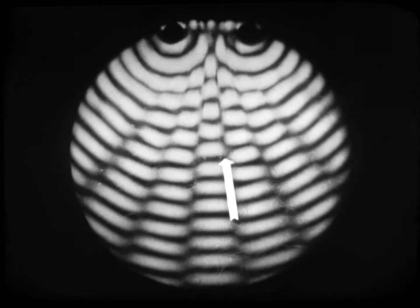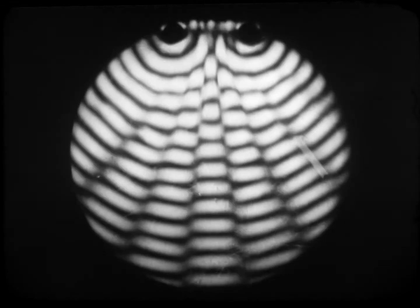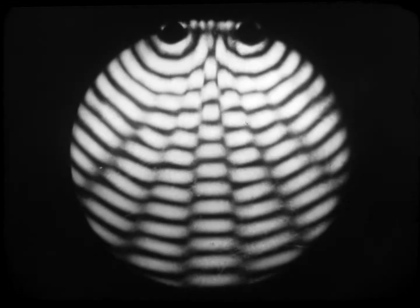Two sources are here vibrating in phase, producing crests and troughs in step with one another. The result is an interference pattern. Along these lines the waves from the two sources always arrive out of step and neutralize each other, producing interference fringes of minimum wave motion. Here we can observe minimum wave motion and maximum wave motion.